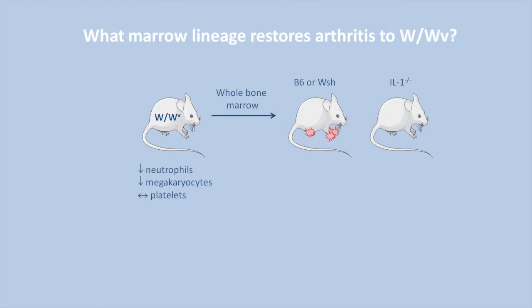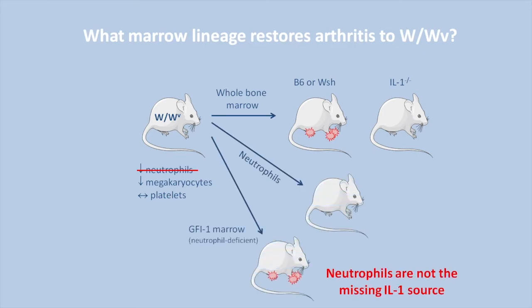To identify what lineage from SASH restored arthritis, we first considered neutrophils, which are relatively deficient in WWV mice. Our previous studies had shown that IL-1 is a key factor produced by mast cells in arthritis. Neutrophils are also a potential IL-1 source, and we confirmed by transfer of IL-1 sufficient and deficient marrow that IL-1 was an essential contribution of the donor lineage. However, adoptive transfer of neutrophils failed to rescue arthritis. Further, transfer of GFI-1-deficient marrow that is genetically unable to produce neutrophils did fix arthritis. We conclude that neutrophils are not the missing IL-1 donor.